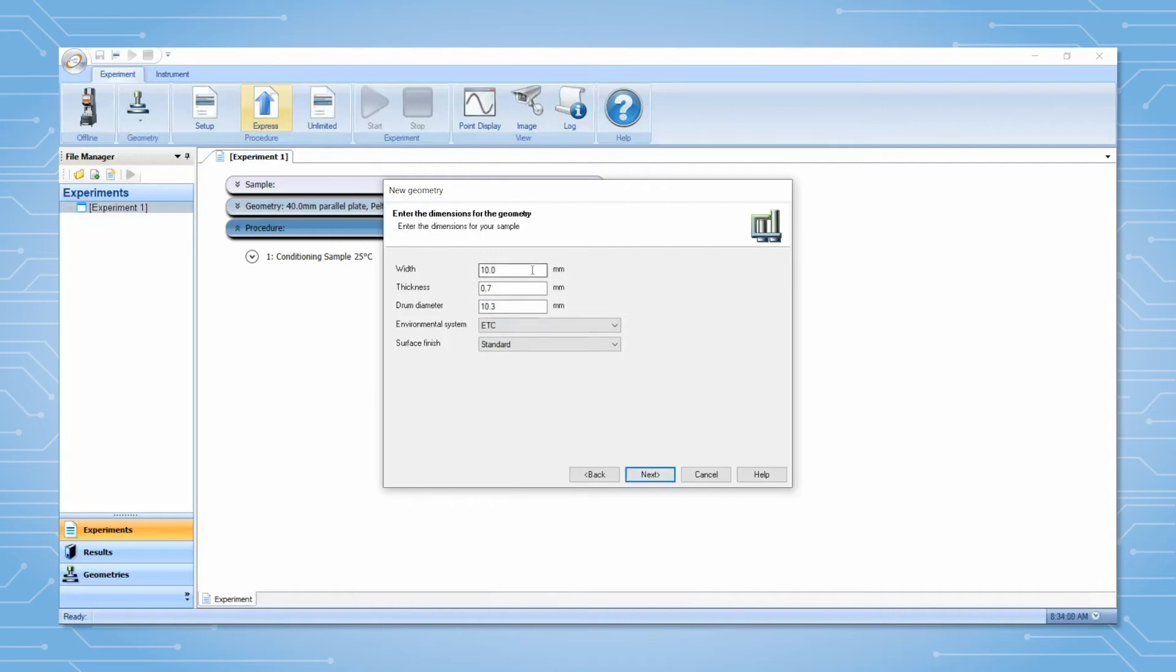Give typical values for your sample, for example 10 x 1 mm. The drum diameter can be left at a default value. Select the drum type, name the fixture, and add any notes. Click Next and Finish.